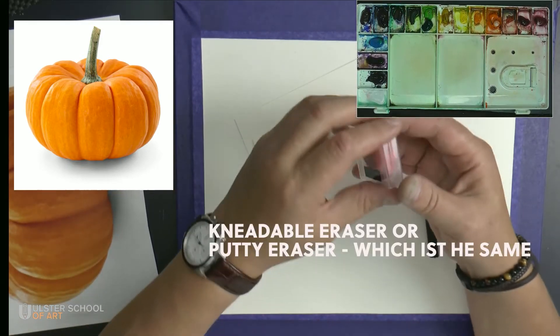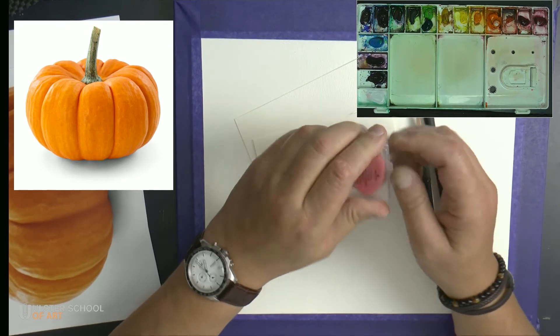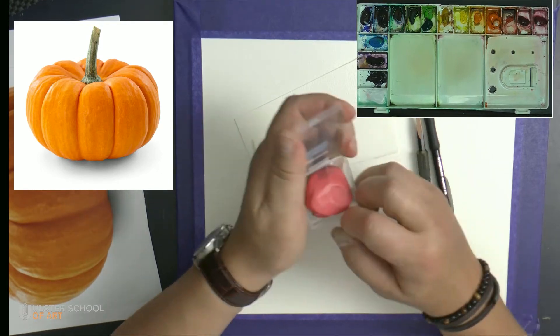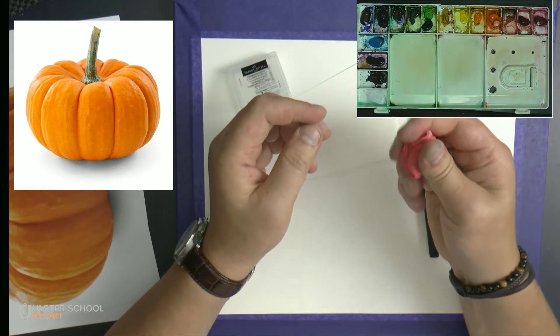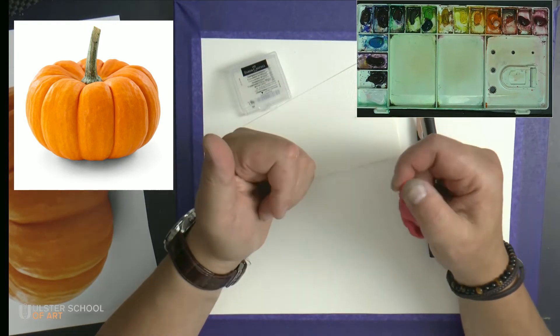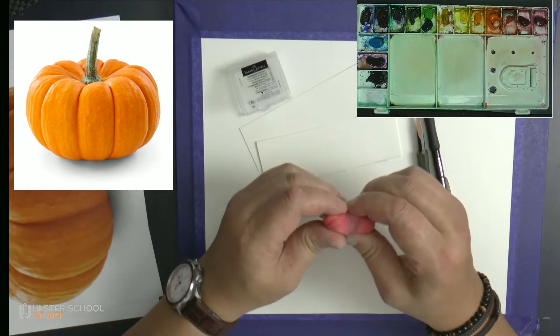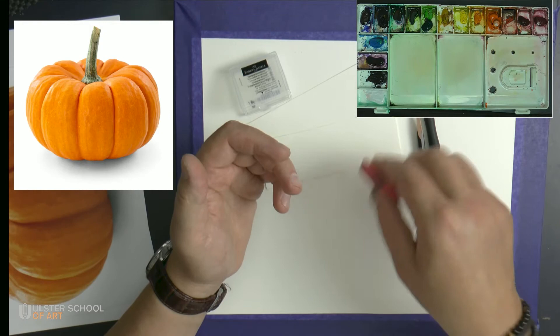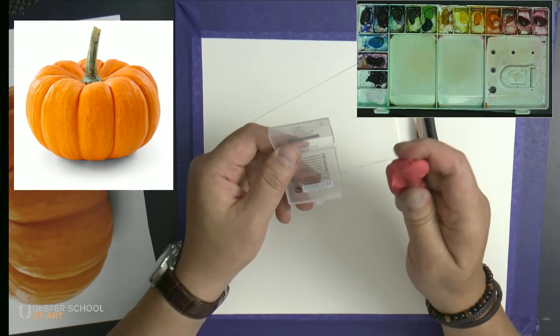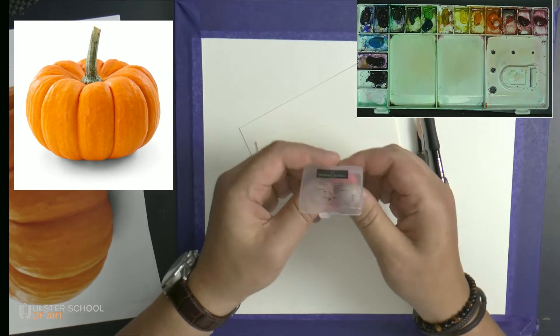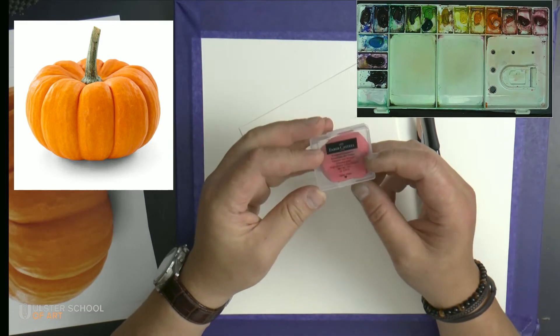The eraser. For watercolor paper, I would recommend something that's called putty eraser or kneadable eraser. Something like this. It looks like that. What it does essentially, it will not allow loads of flakes to appear when you're erasing your lines. It's all gathered in there. There's always some sort of carry box like this. This one is from Faber Castell.